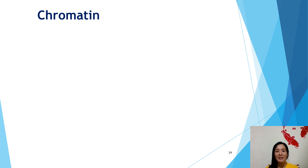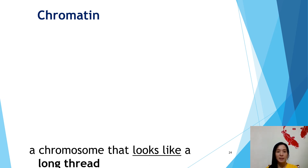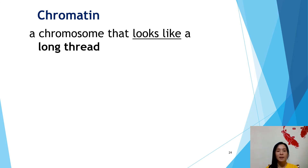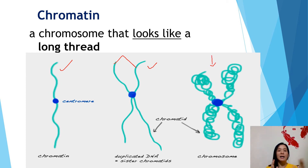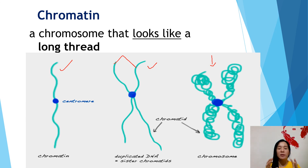Now we look at the term chromatin. Chromatin, chromatid, and chromosome are different terms but actually refer to the same thing in different conditions. Chromatin is a chromosome that looks like a long thread. When the chromosome looks like a long thread, we call it chromatin. This is the chromatin, and this is the duplicated chromatin, which consists of two sister chromatids. When the chromosome condenses to become shorter and thicker, we call it chromosome.